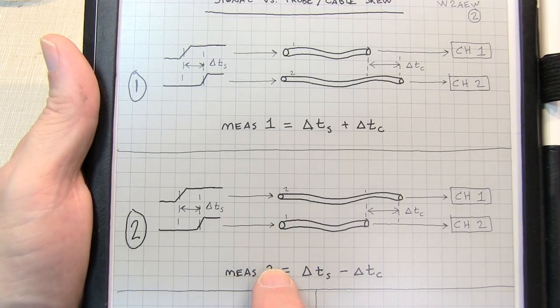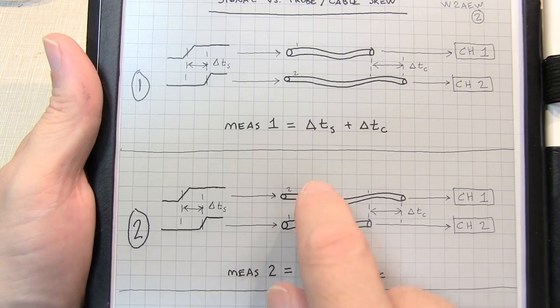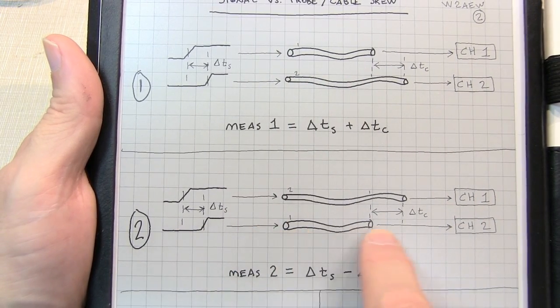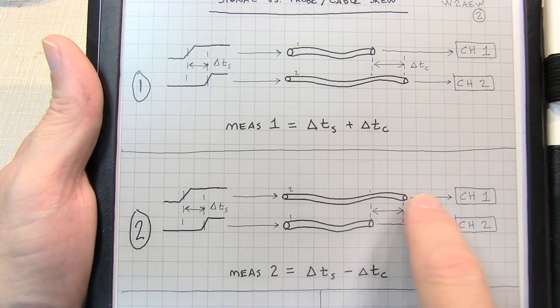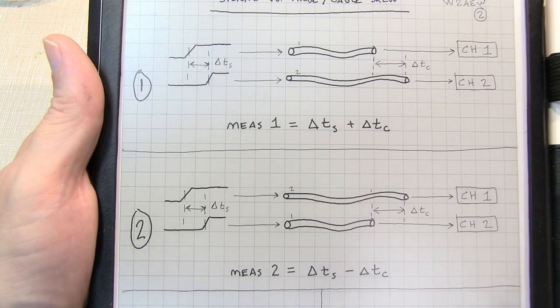Then we make a second measurement, but this time with the cables swapped. Swap both ends. So that now cable 1 is connecting the second signal to channel 2, and cable 2 is connecting the first signal to channel 1. Now, the cable delay is moved to the other signal.